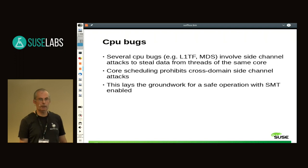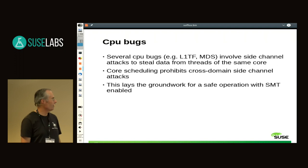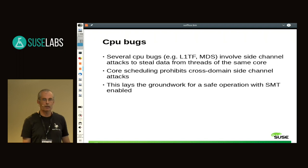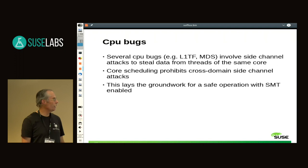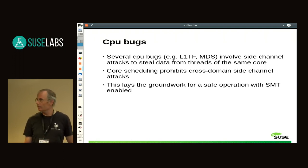One key motivation is security. Recent CPU bugs like L1TF and MDS use side-channel attacks to steal data from siblings on the same core. In a hypervisor, we don't want one guest stealing data from another, so we must not let two guests run on the same core of a vulnerable CPU simultaneously. Core scheduling prohibits cross-domain side-channel attacks. It's not sufficient alone but is necessary — it's major groundwork for safe operation with SMT enabled. Today you must disable SMT to be safe, which causes a performance hit.